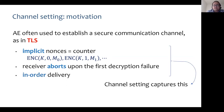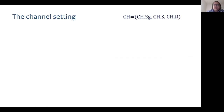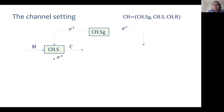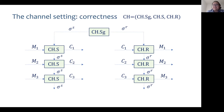A bit more precisely, a channel consists of three algorithms: state generation, sender, and receiver. The state generation algorithm generates initial sender and receiver states. The sender algorithm takes as input the sender state and a message, and outputs the updated sender state and a ciphertext. The receiver algorithm takes as input the receiver state and ciphertext, and returns the updated receiver state and either a message or the error symbol bottom. Correctness requires that if the receiver is given ciphertexts in order and without modification, it will output the same sequence of messages that were sent.